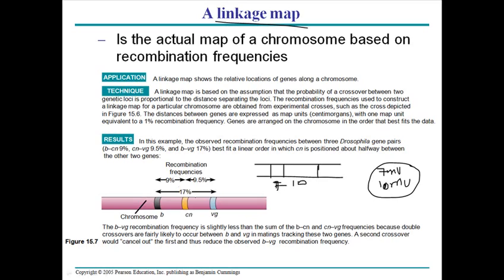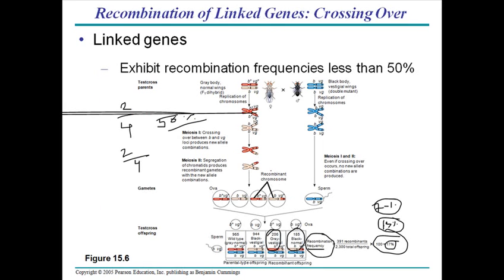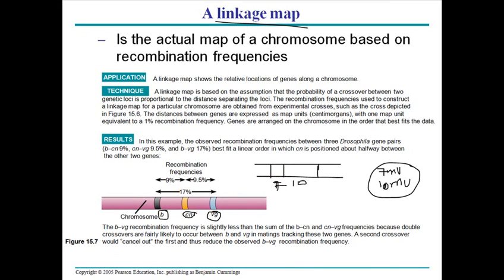In this case, we are researching three different genes of Drosophila: gene cn, gene vg (for wing color), and gene v (for body color). Like Morgan's experiments, we conduct crosses and use the experimental results to determine recombination frequency. We count the recombinant phenotypes, divide by the total offspring, and multiply by 100 to get a percentage. We use dihybrid crosses to achieve this.